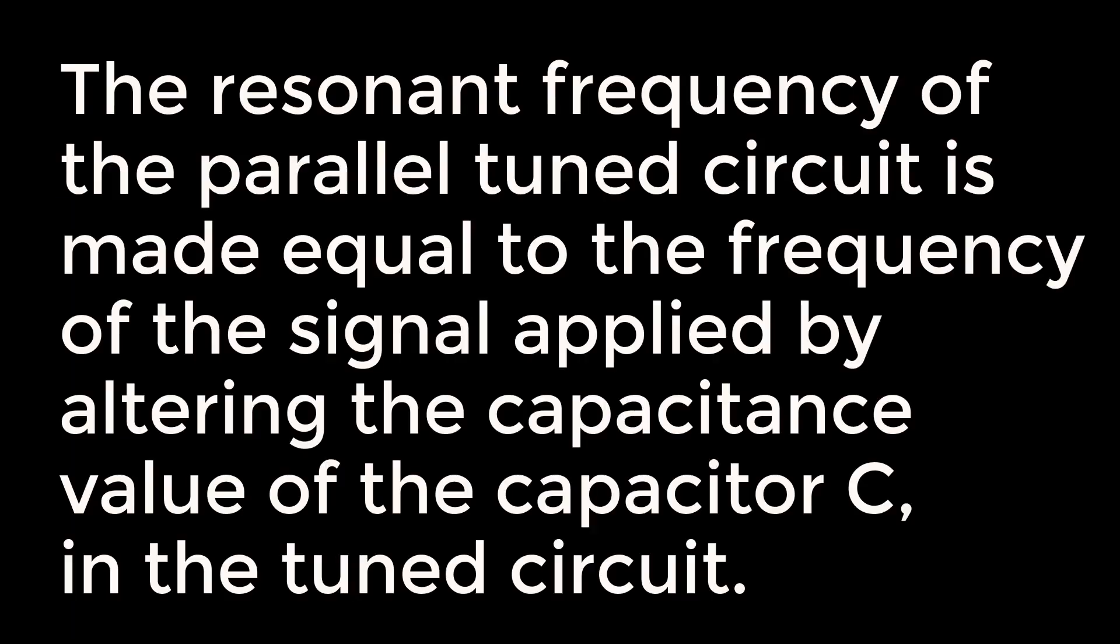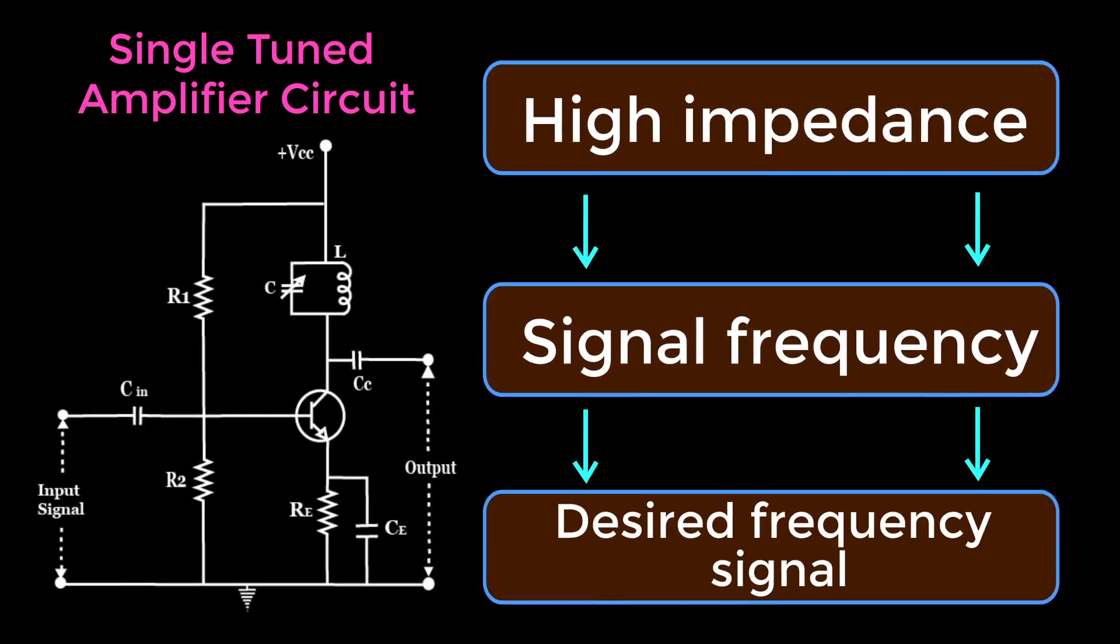The resonant frequency of the parallel tuned circuit is made equal to the frequency of the signal applied by altering the capacitance value of the capacitor C in the tuned circuit. At this stage, the tuned circuit offers high impedance to the signal frequency, which helps to offer high outputs across the tuned circuit.